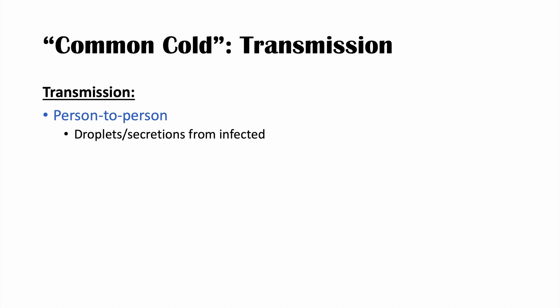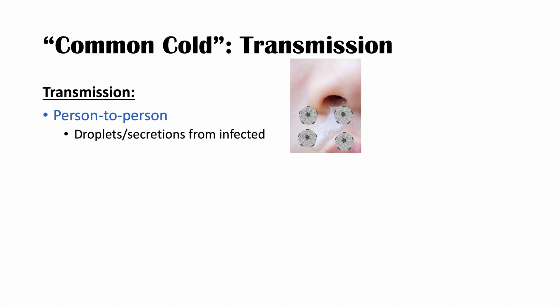The common cold is transmitted person to person, usually from droplets or secretions from an infected individual — specifically secretions from the upper respiratory tract, such as mucus from a runny nose shedding the virus. The virus is shed most on the second day of illness. It is shed from respiratory secretions, not from saliva — about 90% of the time the virus is not found in saliva.